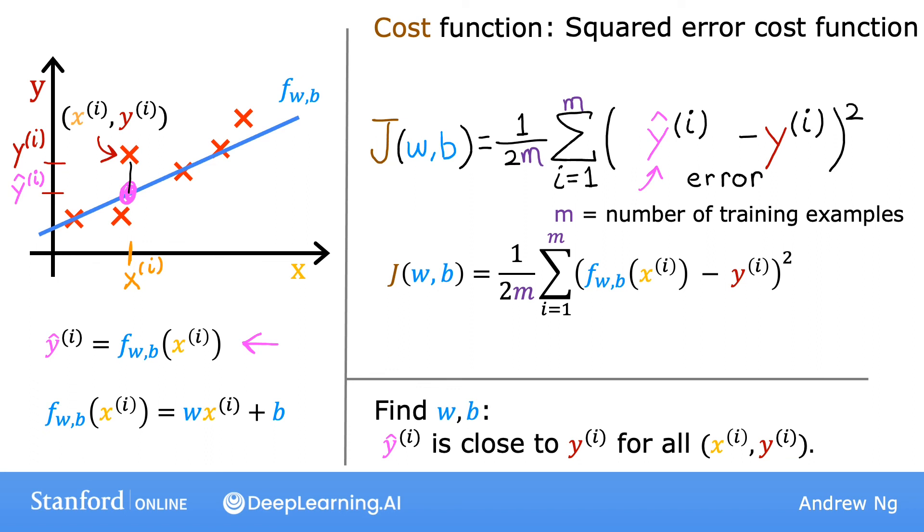Eventually, we're going to want to find values of w and b that make the cost function small. But before going there, let's first gain more intuition about what j of wb is really computing. At this point, you might be thinking we've done a whole lot of math to define the cost function, but what exactly is it doing? Let's go on to the next video where we'll step through one example of what the cost function is really computing. That will help you build intuition about what it means if j of wb is large versus if the cost is small.